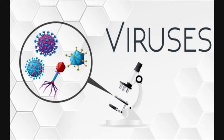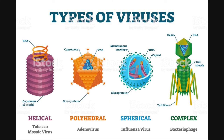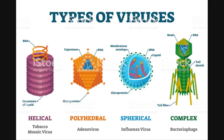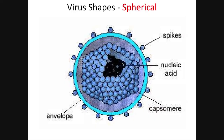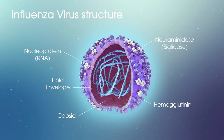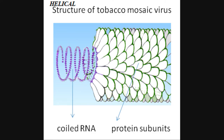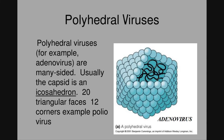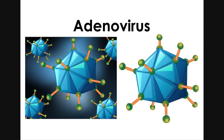Viruses, which can vary in size but are always best measured using nanometers, are found to exist in a number of different shapes, such as the spherical shape of the coronavirus and influenza virus, the helical shape of the tobacco mosaic virus, and the polyhedral shape of the adenovirus.